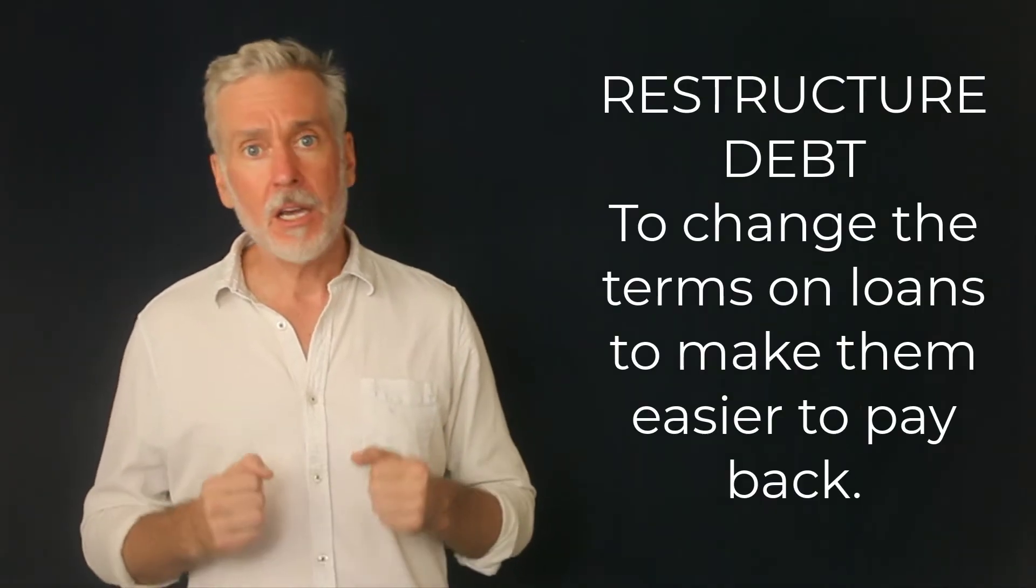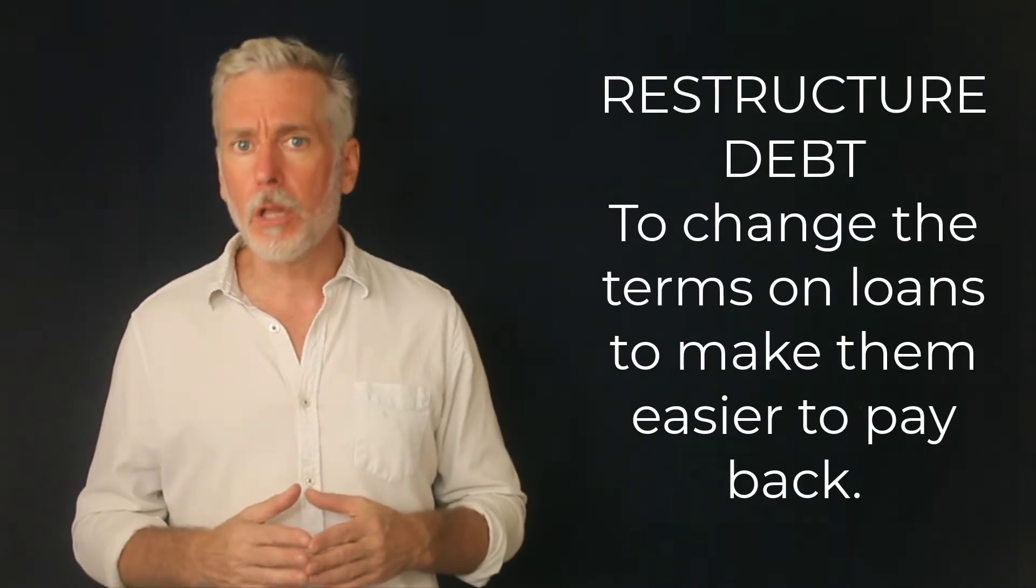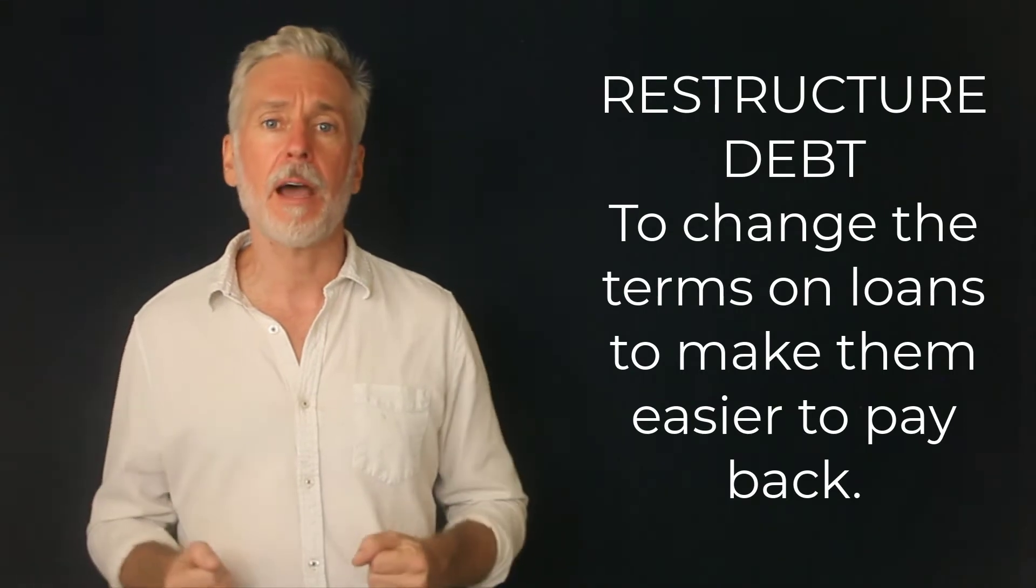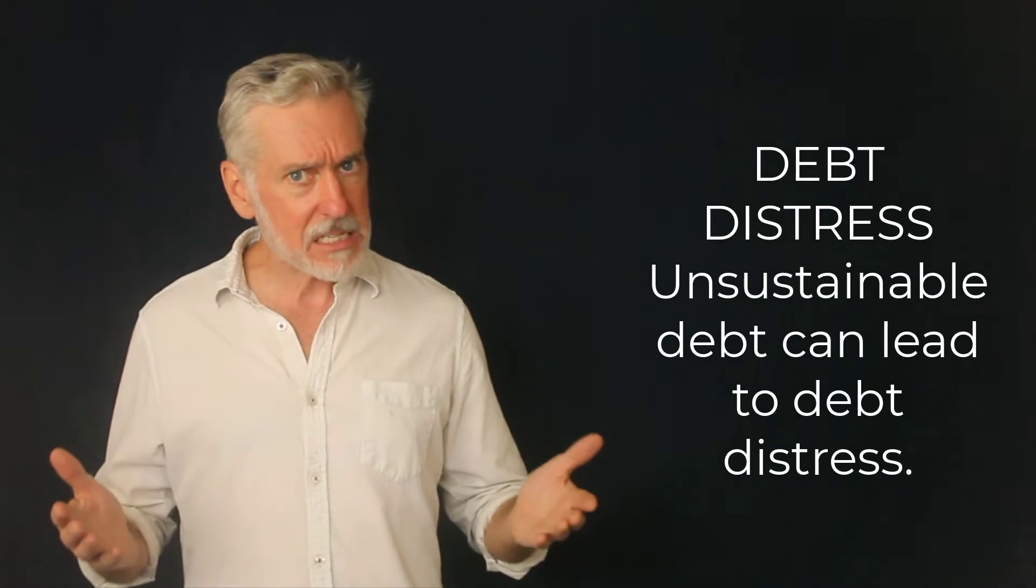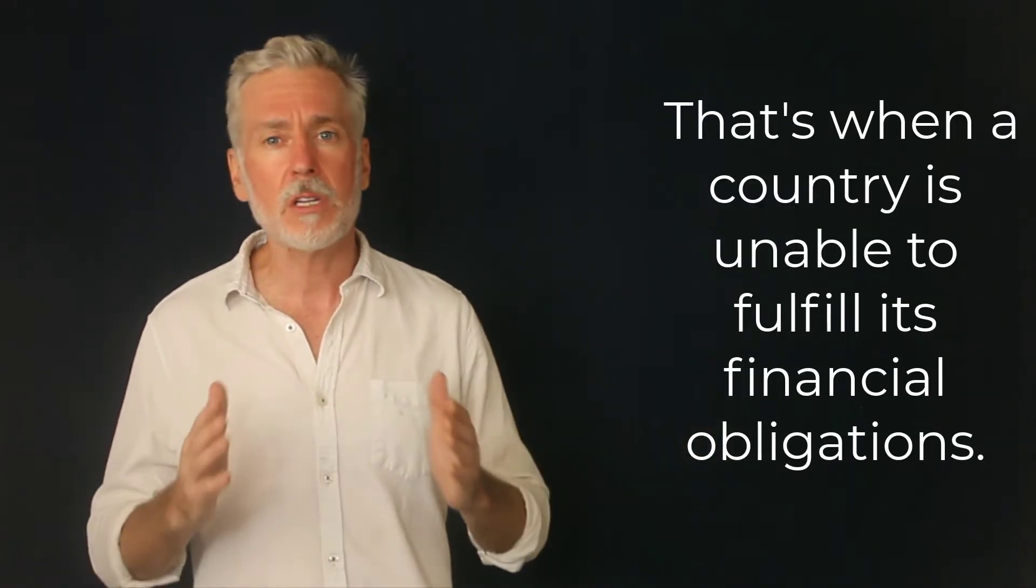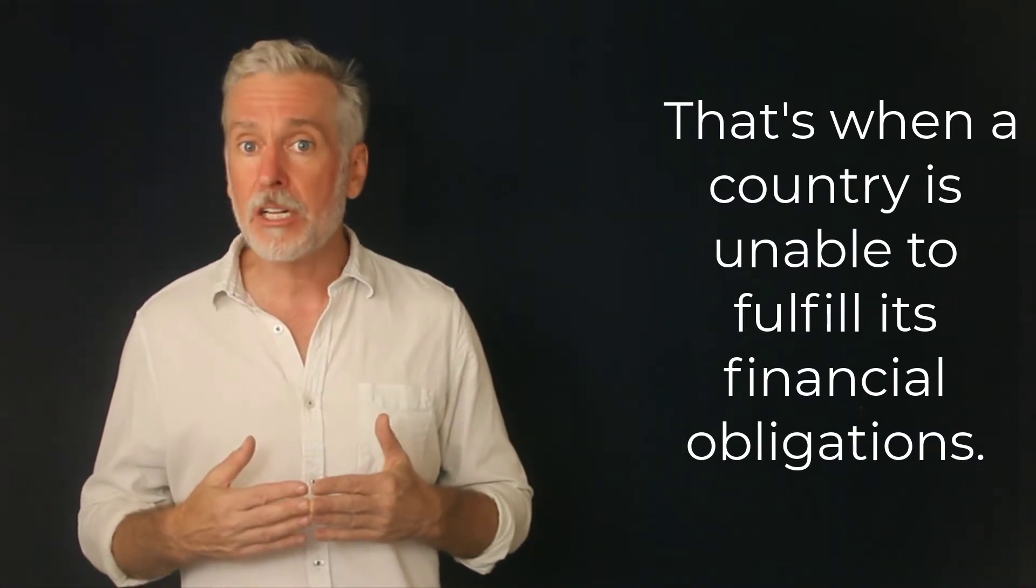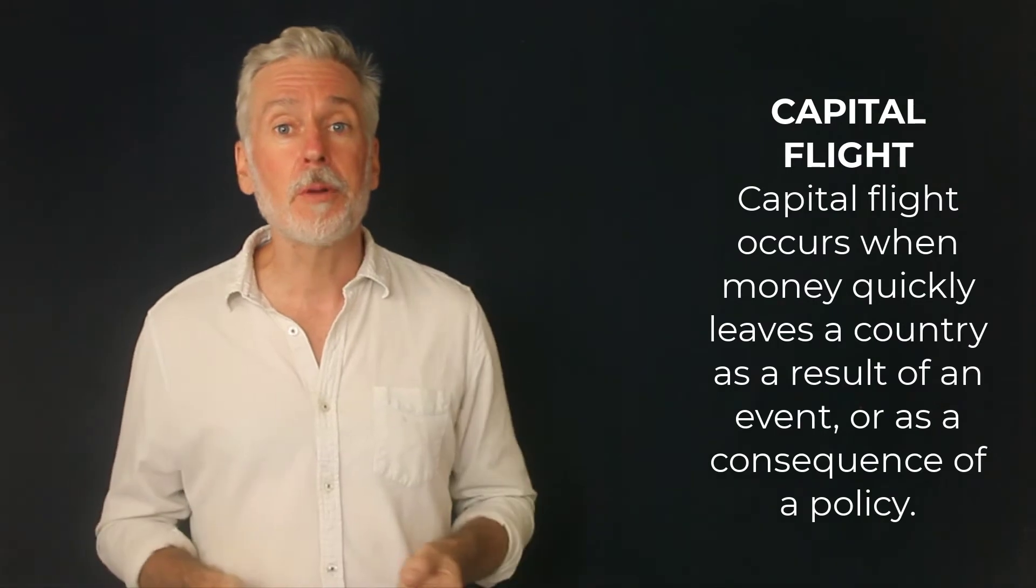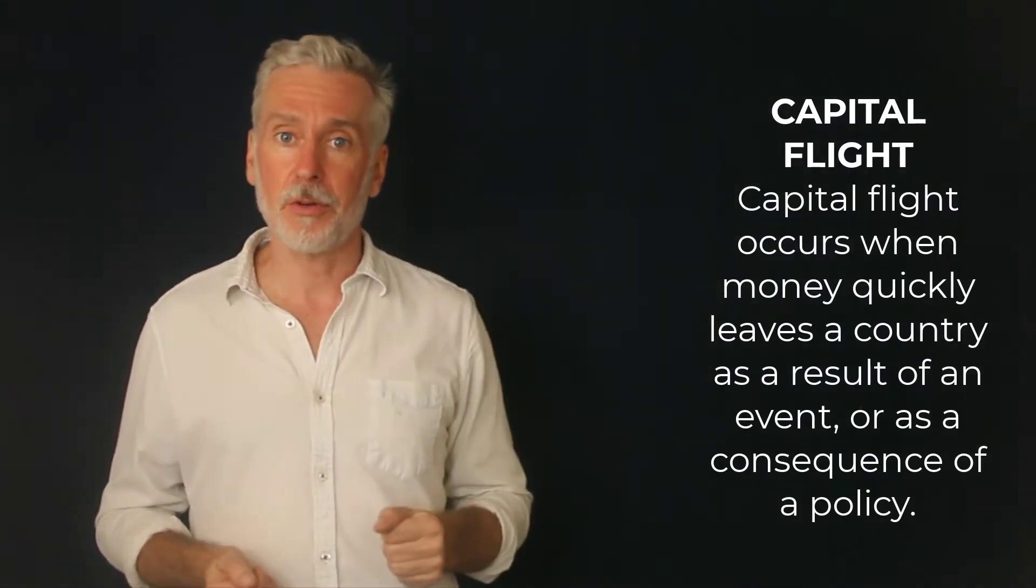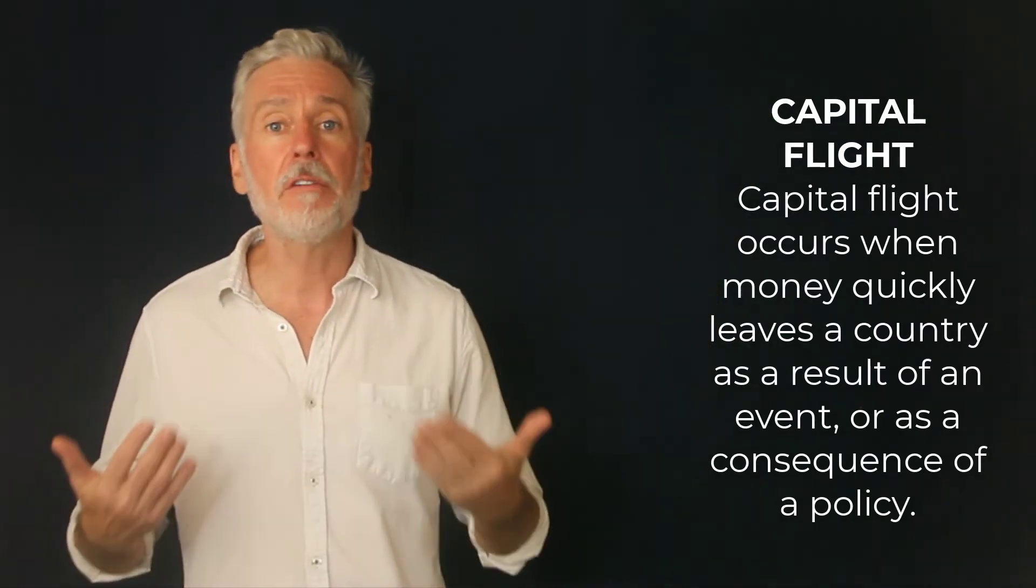Restructure debt. To change the terms on loans to make them easier to pay back. Debt distress. Unsustainable debt can lead to debt distress. That's when a country is unable to fulfill its financial obligations and the debt needs to be restructured. Capital flight. Capital flight occurs when money quickly leaves a country as a result of an event or as a consequence of a policy.